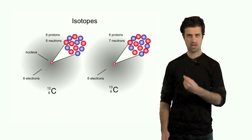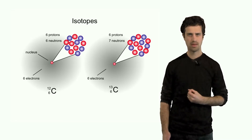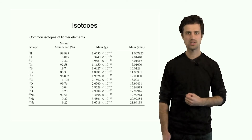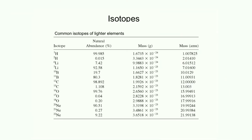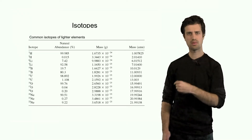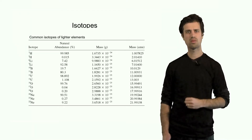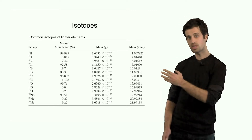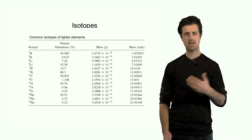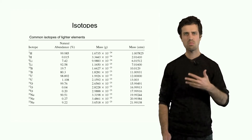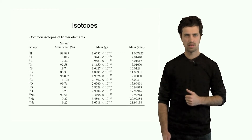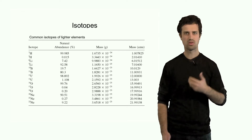These two carbon atoms are each other's isotopes. In fact, most elements have isotopes. Here you see a list. For instance, lithium: there are two lithiums — lithium-6 and lithium-7. They are both lithium, they both have the same number of protons, but different amounts of neutrons. Lithium-7 has one neutron more than lithium-6. We also see oxygen: oxygen-16, 17, and 18 — three major isotopes of oxygen. They differ only in their number of neutrons in the nucleus.